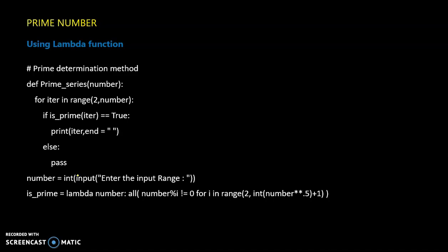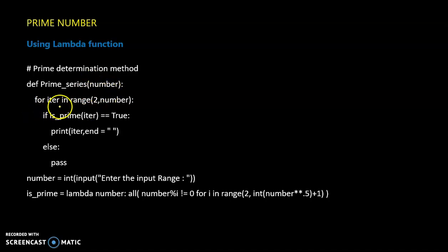In the first method, we are going to print a set of prime numbers. We use a for loop with iteration in range 2 to number. If it is not a prime number, we check the range. We will print the entire range of prime numbers.